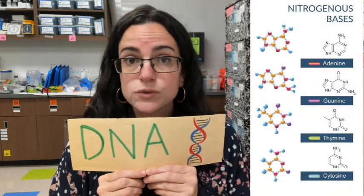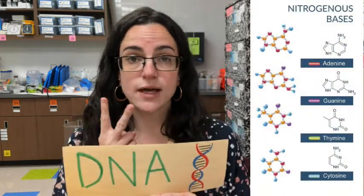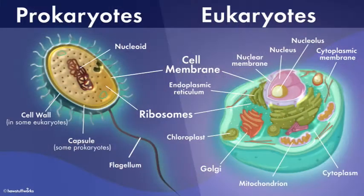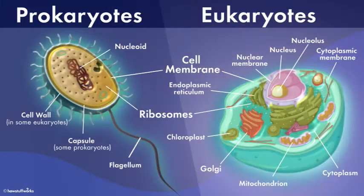Remember, there are two types of cells. One is a prokaryote, also known as a prokaryotic cell. And the other is a eukaryote, or a eukaryotic cell. And that DNA is going to look different on the inside of both of those cells.